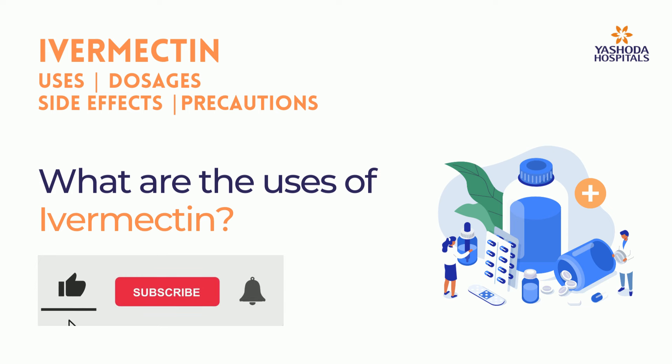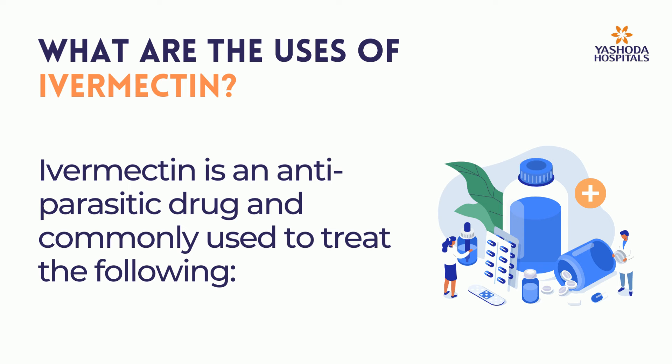What are the uses of Ivermectin? Ivermectin is an anti-parasitic drug and commonly used to treat the following conditions.